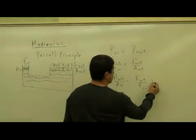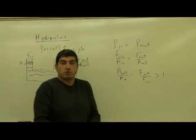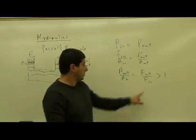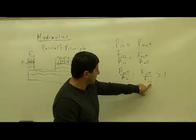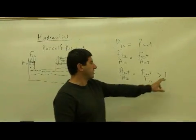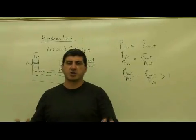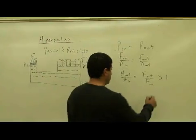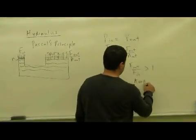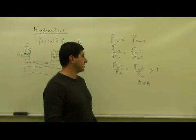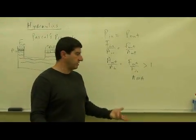So we want this number to be bigger than one. We want to be able to exert a smaller force in order to lift a heavy object. So we want this to be bigger than one. This is called the actual mechanical advantage, AMA. Actual mechanical advantage of this machine.